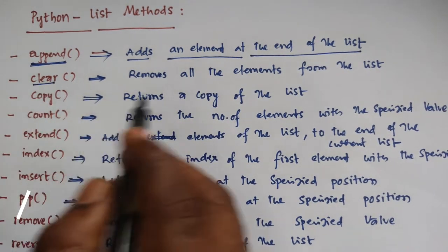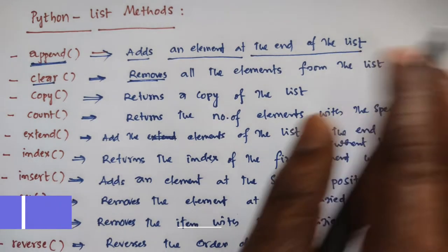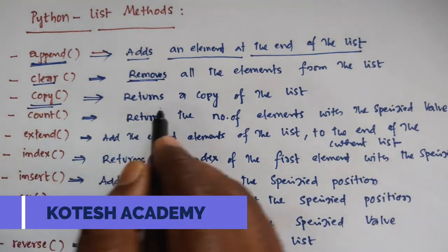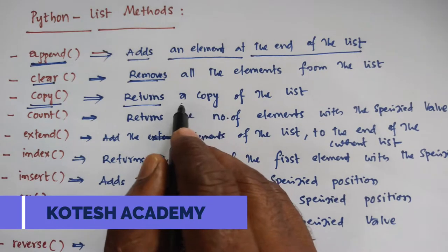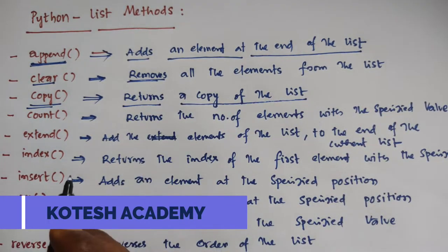Next, clear removes all the elements from the list. You can remove all elements. Copy returns a copy of the list. You can copy from one variable to another variable.